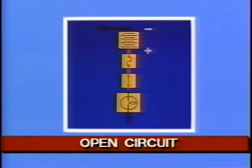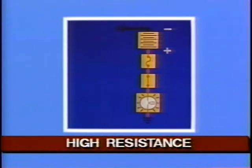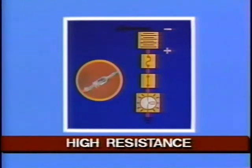Occasionally, circuit operation halts due to an open in the circuit. Examples include a loose connector or a broken wire. When an open occurs, it's as if someone switched off the circuit. Although all circuits have a certain amount of resistance, high resistance can adversely affect circuit operation. Corroded terminal connections can cause enough resistance to render the circuit inoperative.